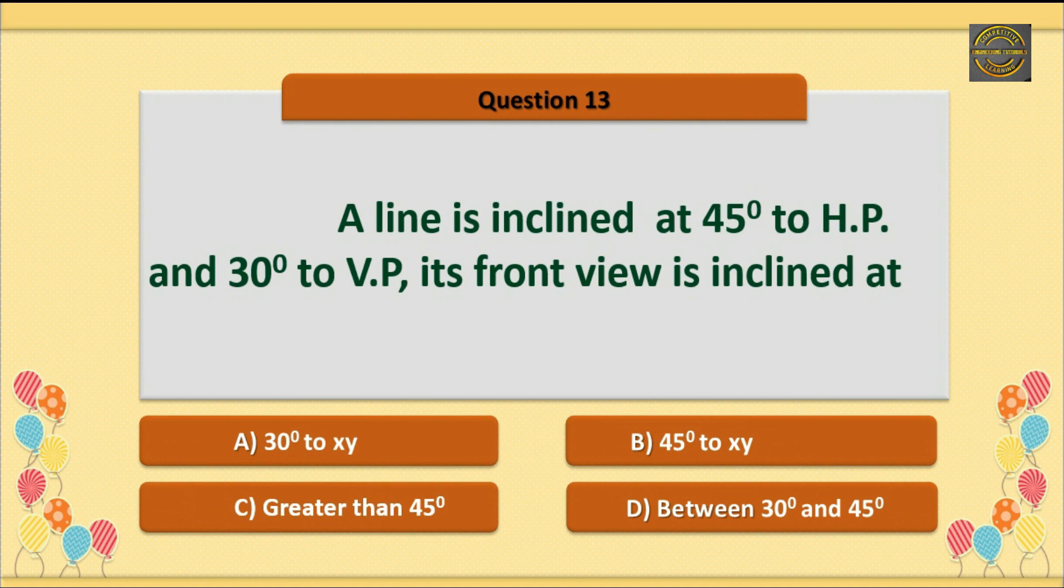Question 13: A line is inclined at 45 degrees to HP and 30 degrees to VP. Its front view is inclined? Option C is correct: Greater than 45 degrees.